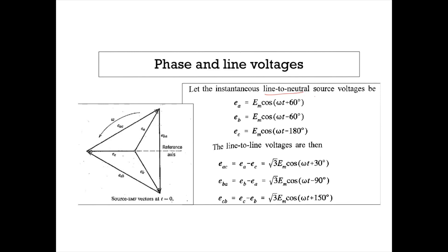These are line-to-neutral source voltages, and then we have three line-to-line voltages. These voltages are expressed using the cosine function. The phase voltage or line-to-neutral voltage Ea is represented by a vector at an angle of 60 degrees from the reference axis, so Ea equals Em cos(ωt + 60°). Similarly, Eb has a 60 degree phase displacement, so the expression for Eb is Em cos(ωt − 60°).